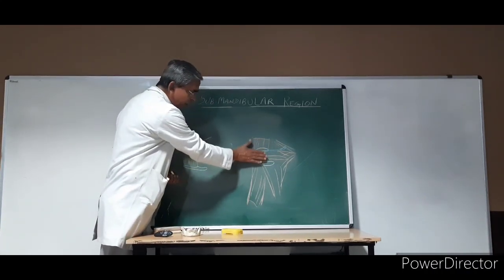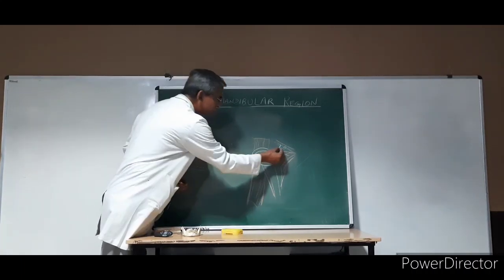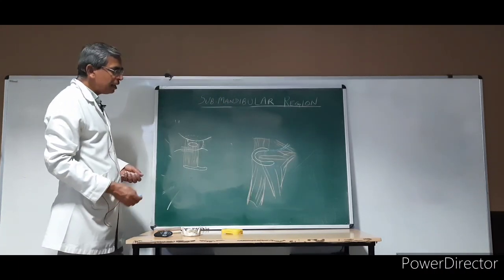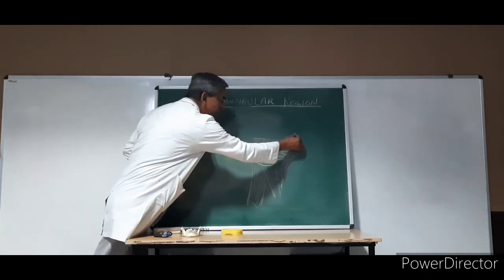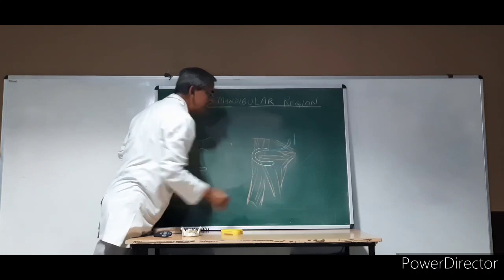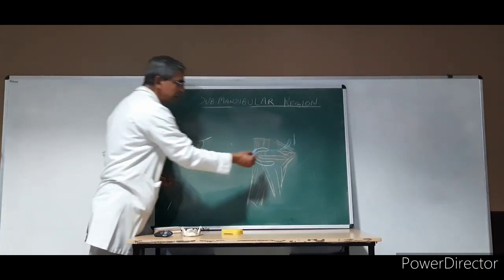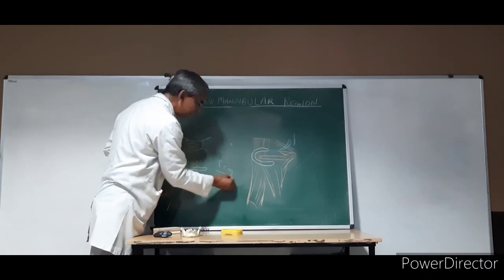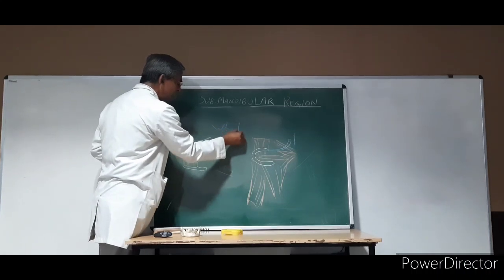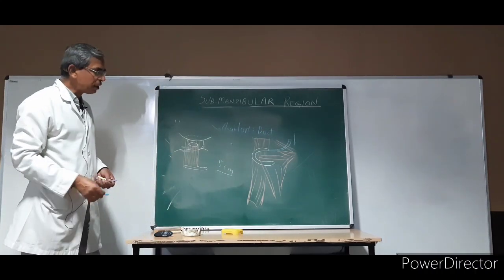First it passes anterior to the hyoglossus muscle, then between the hyoglossus and the genioglossus muscle, and then deep to the genioglossus muscle, entering the floor of the oral cavity. It opens by the side of the frenulum of the tongue and the sublingual papilla. This duct is about 5 cm in length and is called Wharton's duct — the submandibular duct.